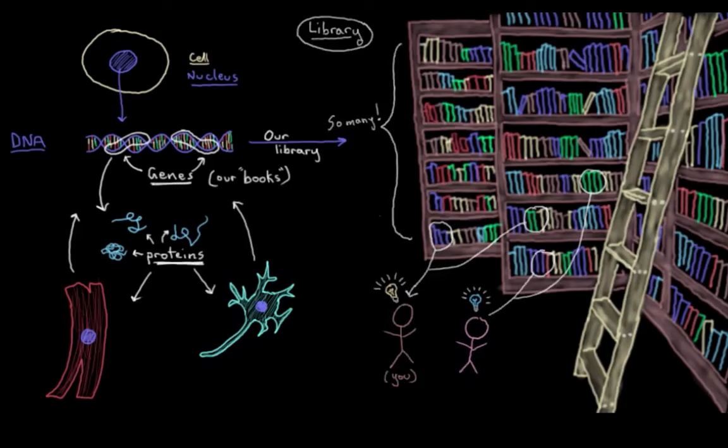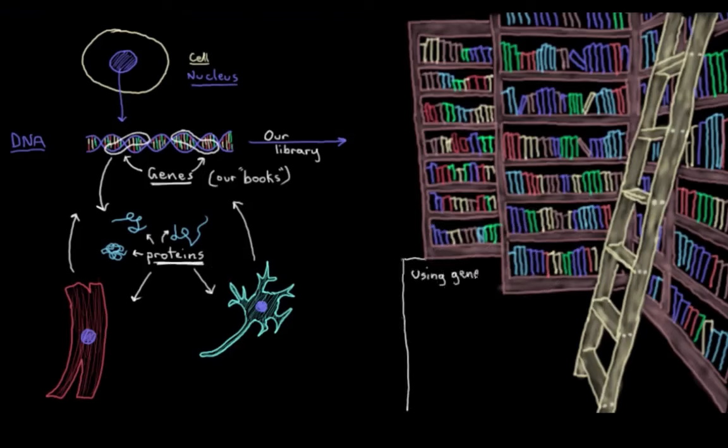And just a bit of terminology here: when a cell is actively using certain genes it's said to be expressing those genes. And a gene being expressed is said to be turned on and one not being expressed is turned off. So just keep that in mind.